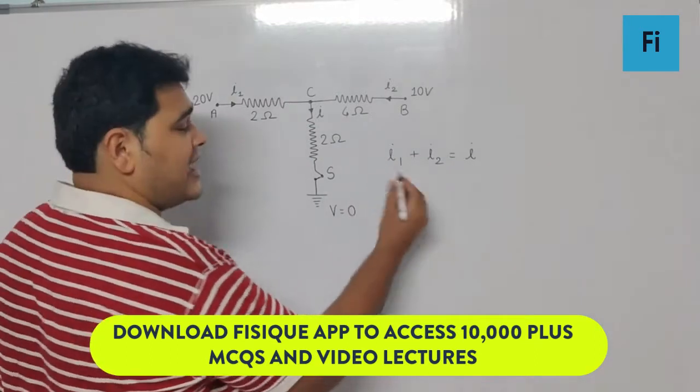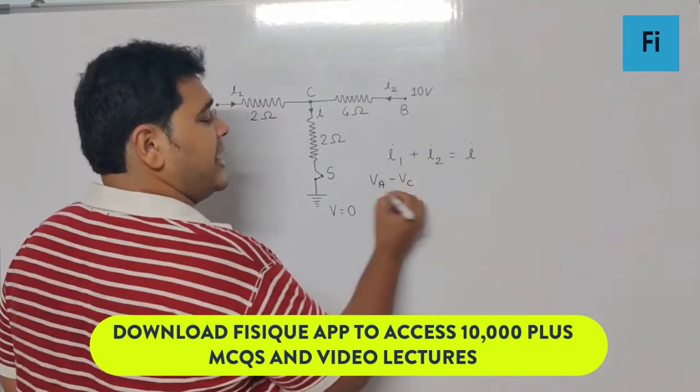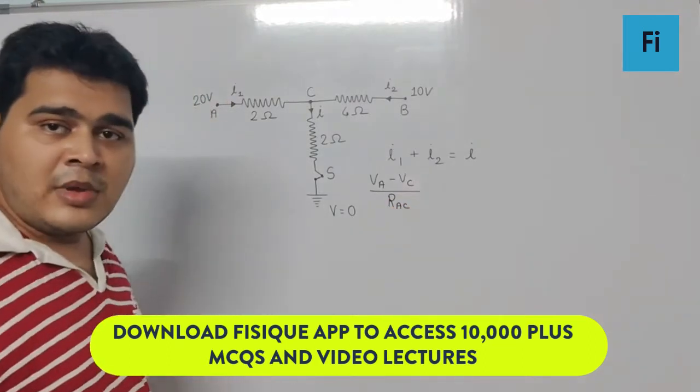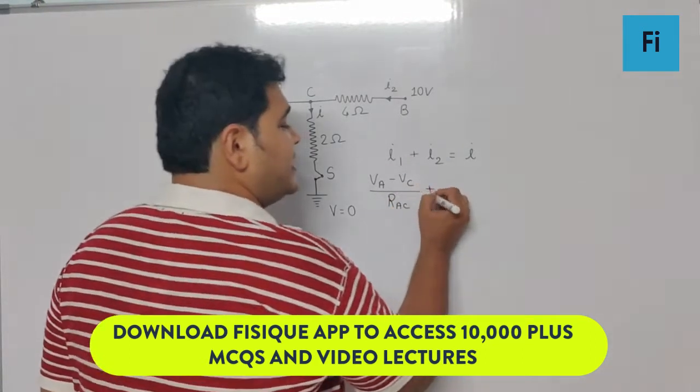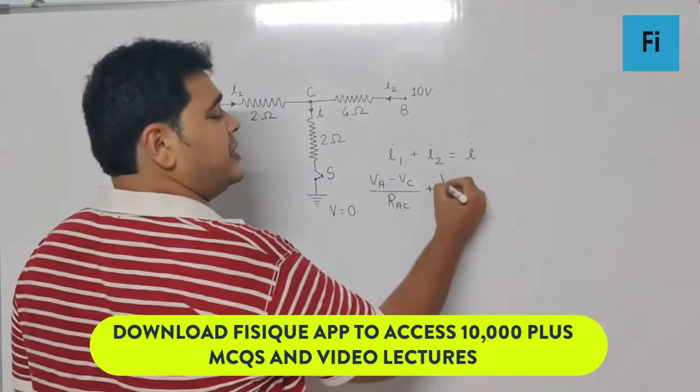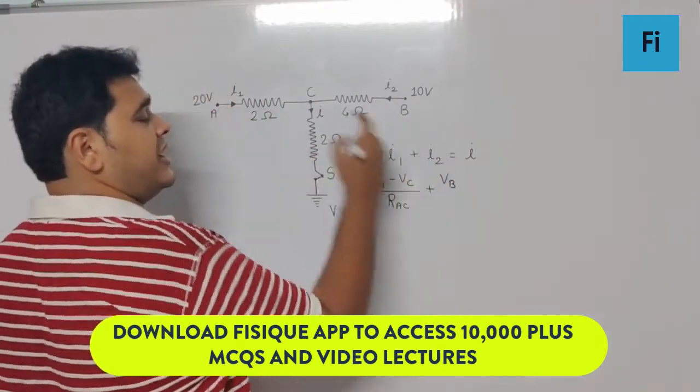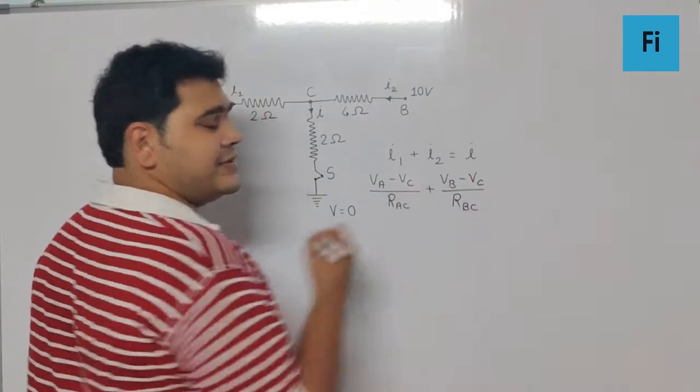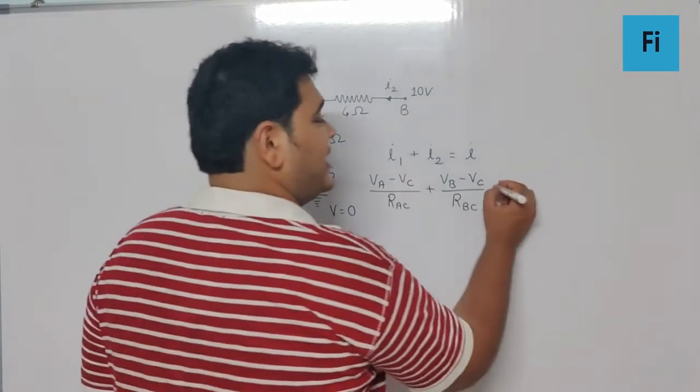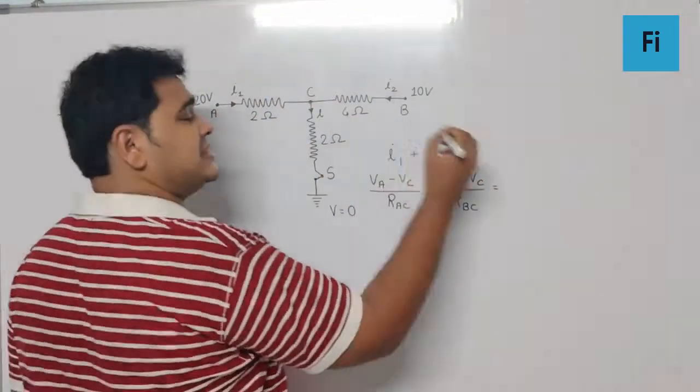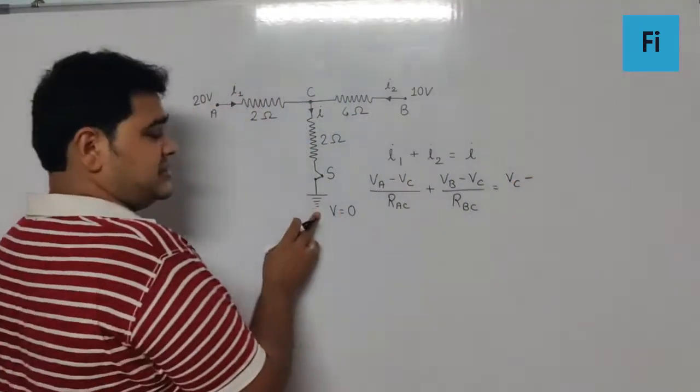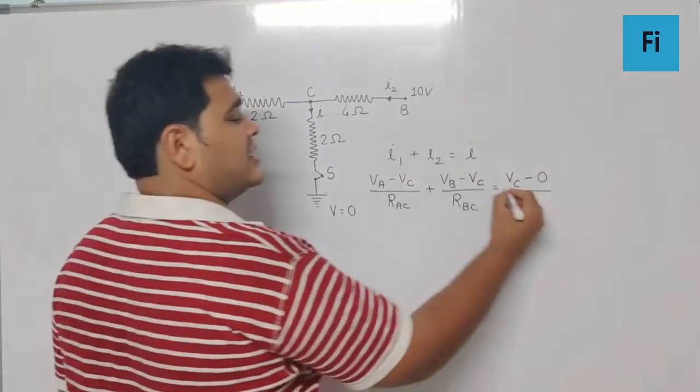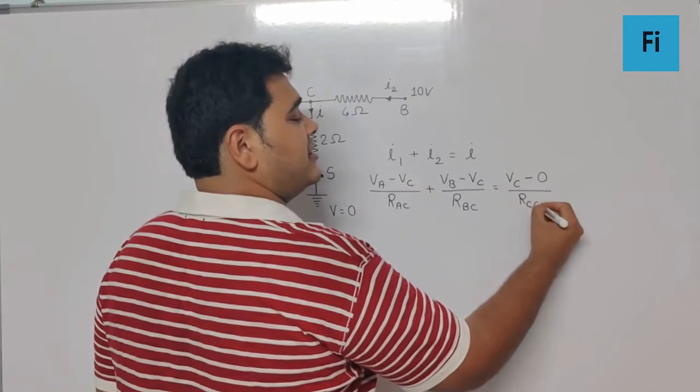Similarly, can we write i2 as V at B minus V at C upon the resistance between B and C? And similarly can we write i as V at C minus the ground potential which is 0 upon the R between C and ground?